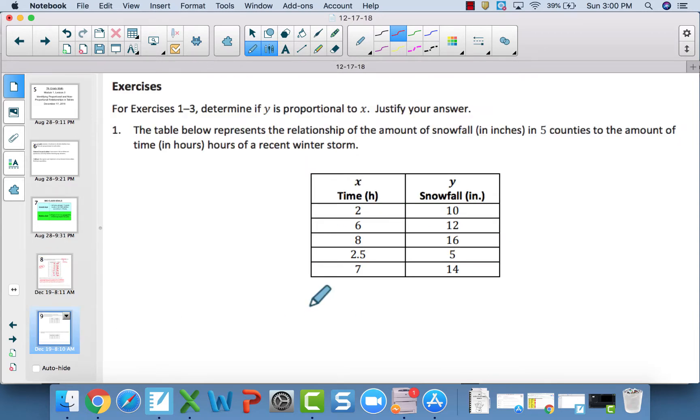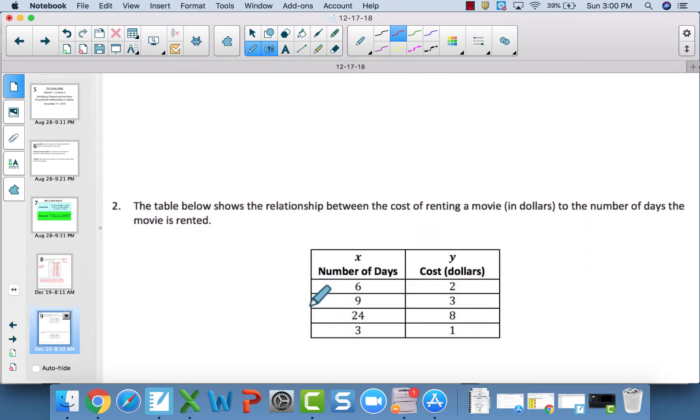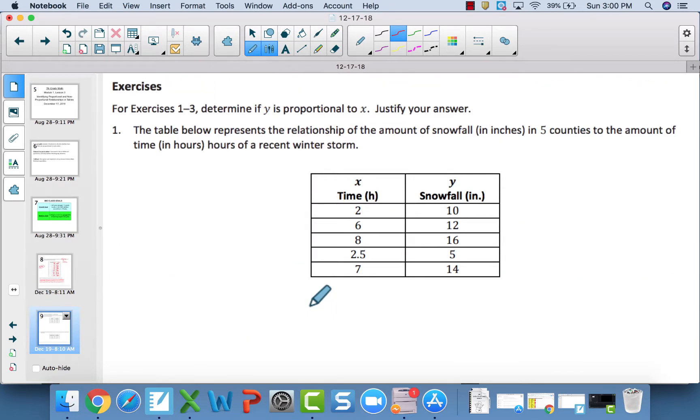For exercises 1 through 3, you're going to examine the tables and say yes or no with whether or not the tables represent a proportional relationship. And then you are going to justify your answer. So go through for each of those tables, say yes or no and justify. Once you are done with all three, come back and check the video.